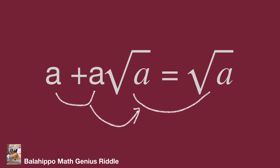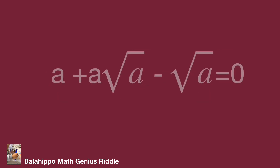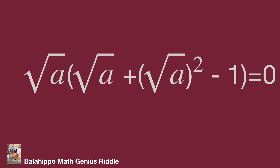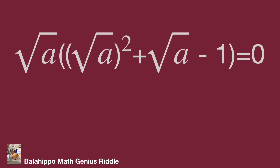Move all items to the same side of the equation: A plus A times square root of A minus square root of A equals 0. Since square root of A is the factor, replace A with (square root of A) squared. Rewrite the equation as (√A)² plus (√A)² times √A minus √A equals 0. Factor out √A to get: √A times (√A plus √A·√A minus 1) equals 0. So square root of A equals 0, and therefore A equals 0. This is one answer.